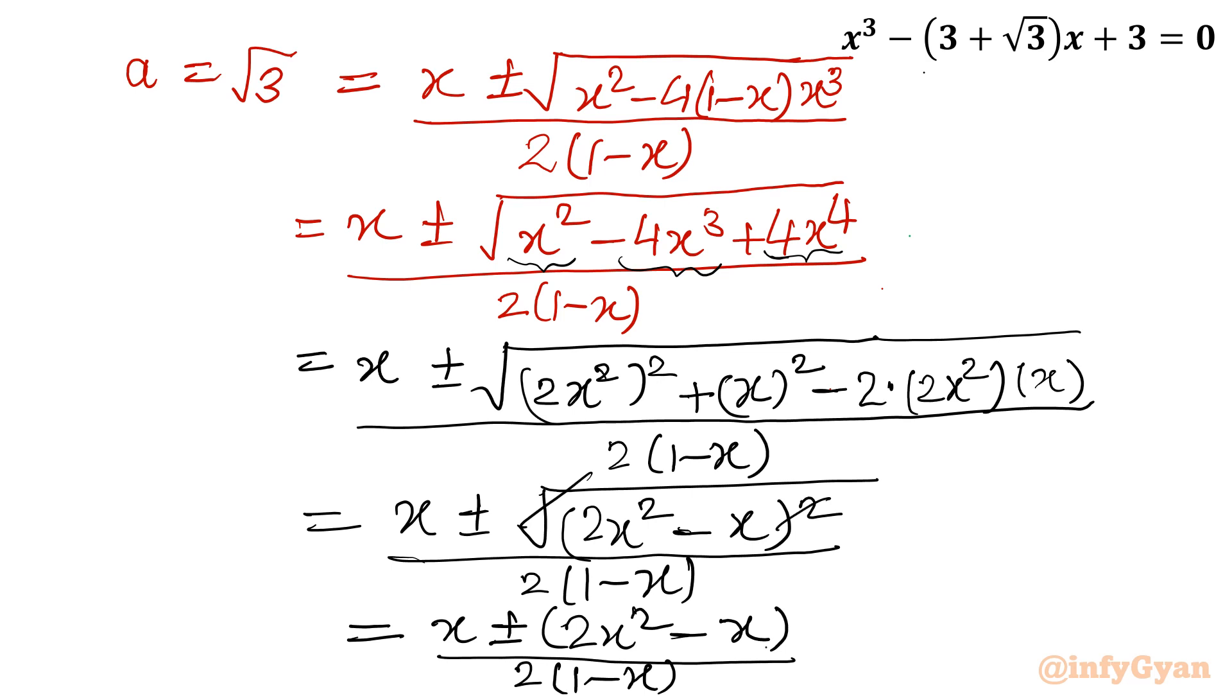Now we will consider plus minus sign one by one and we will simplify. Let me write √3 = x + (2x² - x) / 2(1-x). And if I am taking minus sign in between, then it will become x - (2x² - x) / 2(1-x).